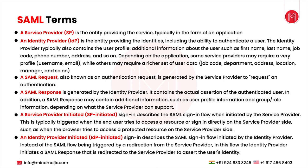Whatever information is required by the service provider on successful or unsuccessful authentication, the identity provider provides that information. Simply put: the identity provider authenticates users, and the service provider is the application you are trying to get into. The service provider and identity provider communicate with each other, and there must be a request and a response being generated.